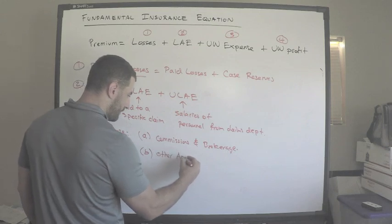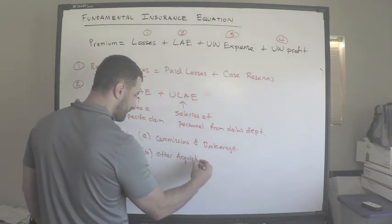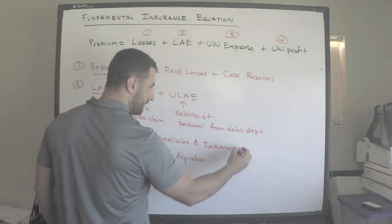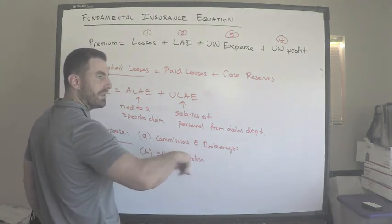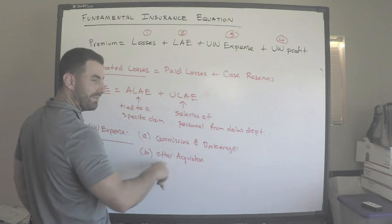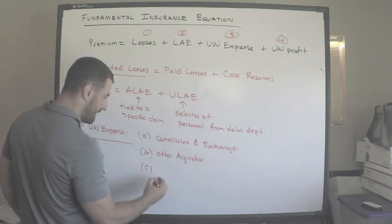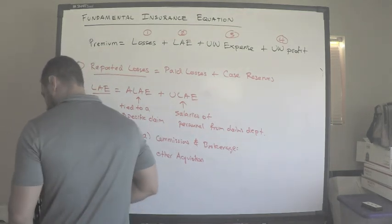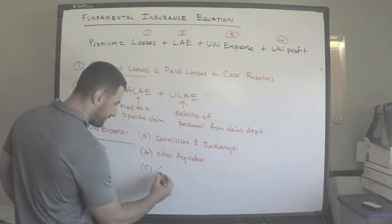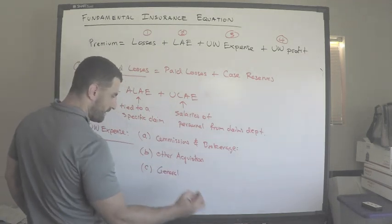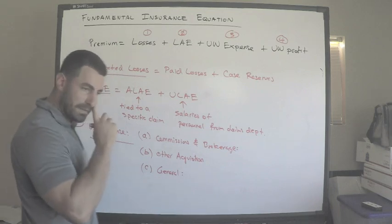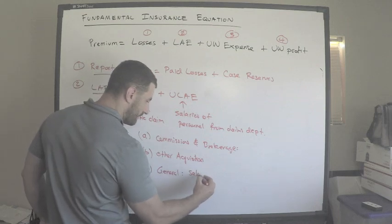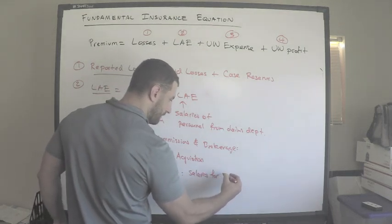Next we have other acquisition costs — things like advertising. Then we have general expenses, which are associated with the day-to-day running of the business, such as salaries for actuaries.